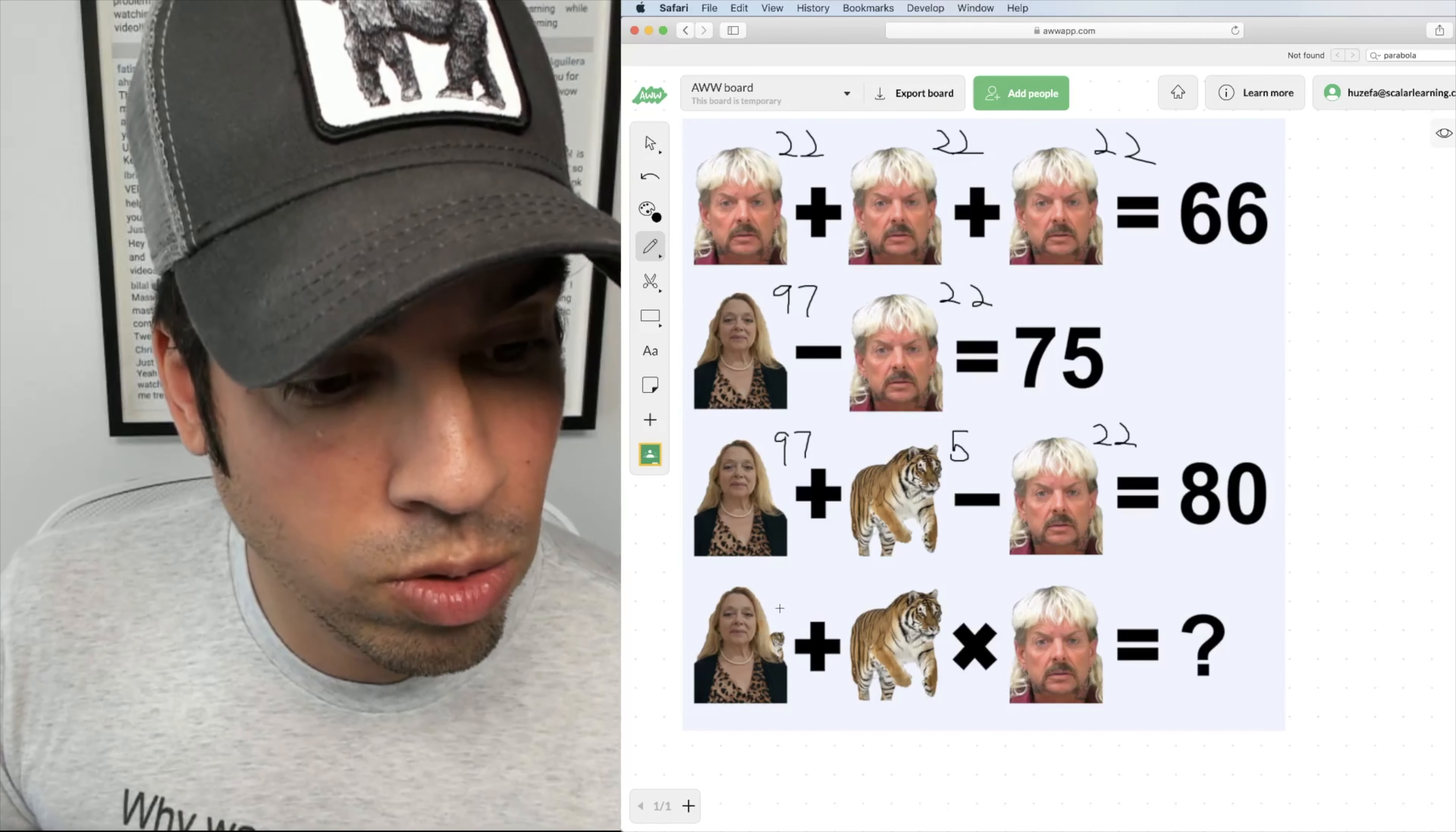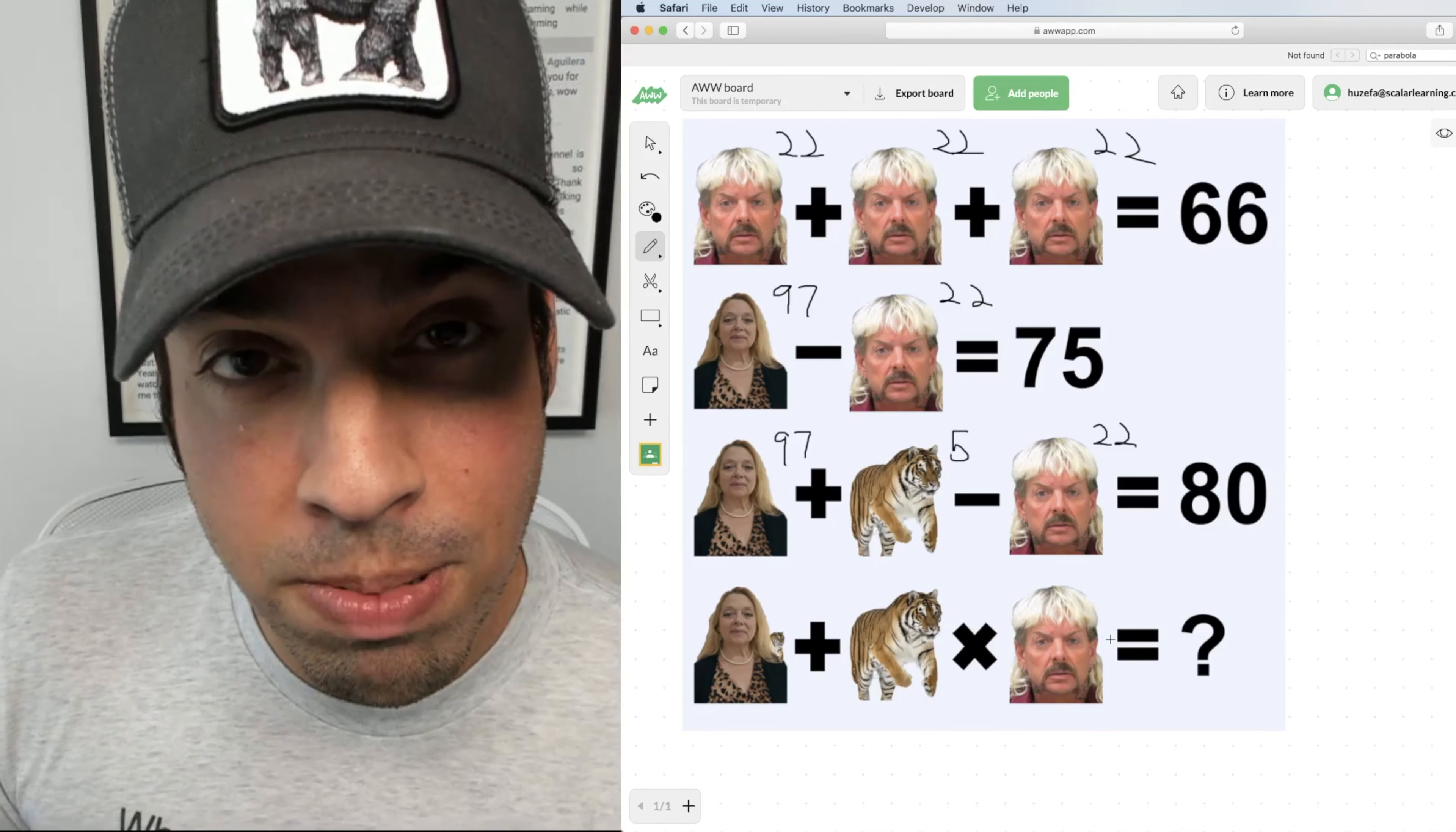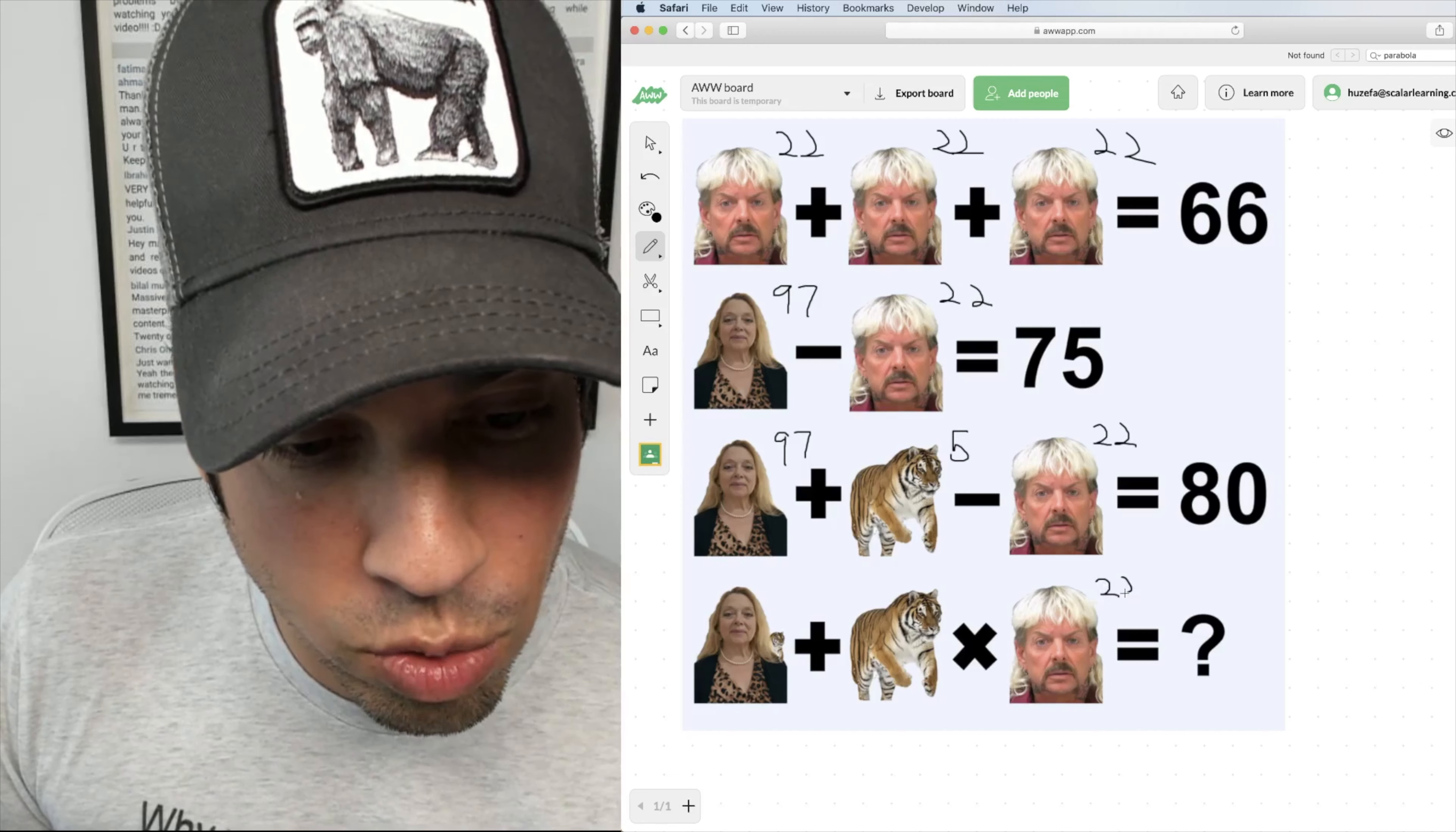Last but not least we come down to the last equation. Now there's a couple of things we don't want to get too far ahead, but we know that Joe Exotic is 22.